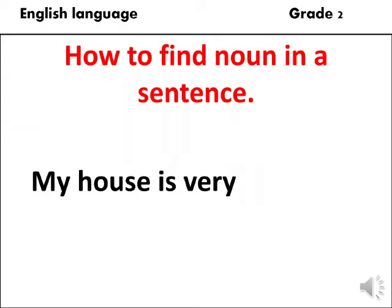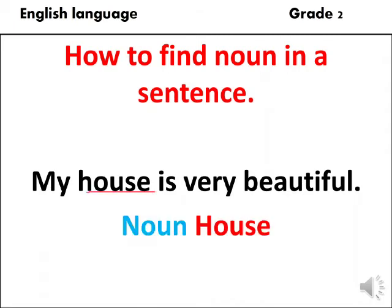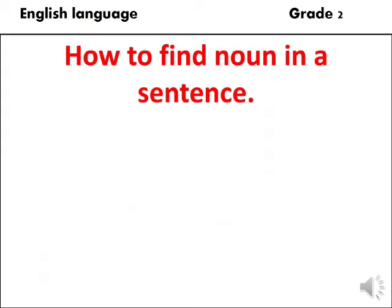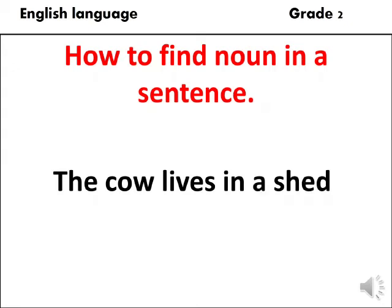Another sentence: "My house is very beautiful." Can you guess what the noun is here? It's house. The noun is house and it's the name of a place. Next sentence: "The cow lives in a shed." The noun here is cow — it's the name of an animal.